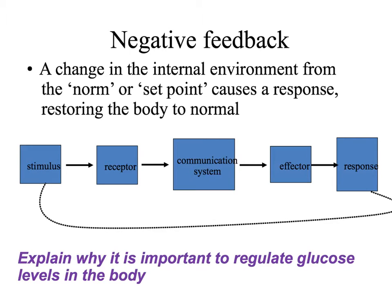The way homeostasis takes place is through a process called negative feedback. Negative feedback is where a change in the environment, such as a change in water potential or temperature, would act as a stimulus. This causes the change to be detected and the organism to respond to restore the system back to normal. The stimulus is detected by a receptor and communicated to a communication system, which is always the nerves or hormones. The communication system connects with the effector, which is a muscle or a gland, and this leads to a response which corrects or reverses the change.